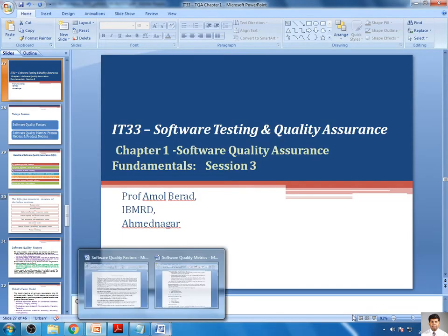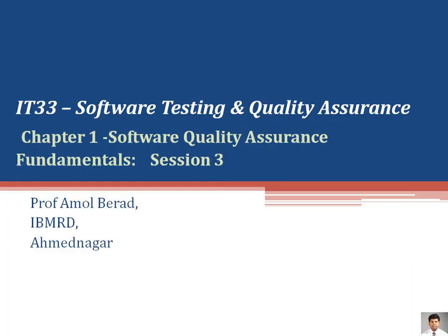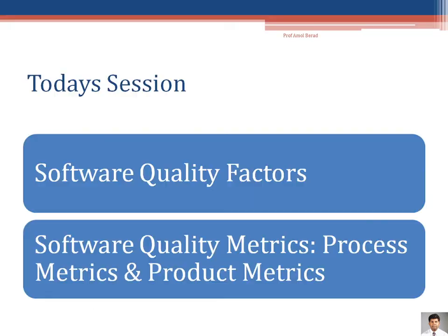Now we will start with today's session. The focus of today's session will be preparing ourselves for 10-mark questions being asked in university. This is the third session on chapter number one, Software Quality Assurance Fundamentals. Today's session will majorly focus on software quality factors and software quality matrices — that is process matrices, product matrices, and in-process matrices. We will go into detail on these.